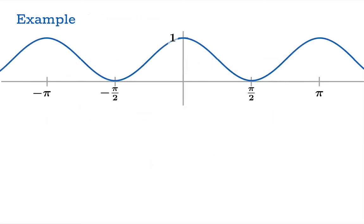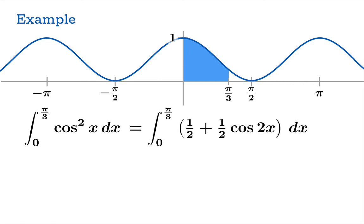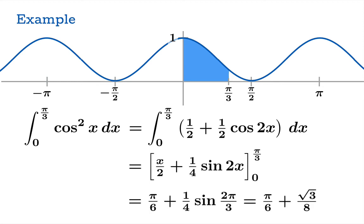Now let's take a look at an example of definite integration. Suppose we want to take the definite integral of cos²(x) from 0 to π/3. We have our formula to rewrite cos²(x) as a sinusoidal function, and then we can find the antiderivative, plug in the endpoints, and in the end we get π/6 + √3/8.